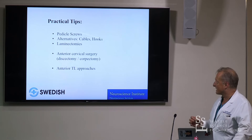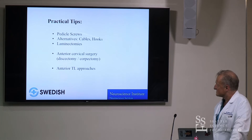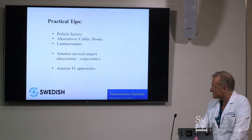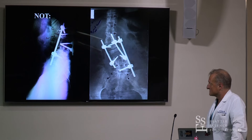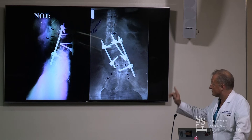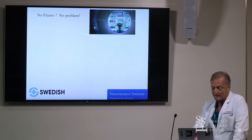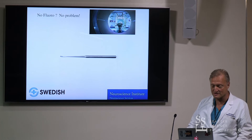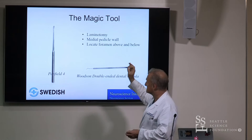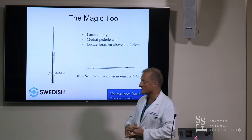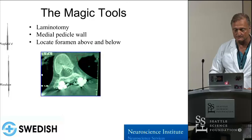Practical tips to close: pedicle screws, alternatives like cables and hooks, and the power of laminectomy. Magic tool number one is a Penfield IV. Magic tool number two is a Woodson dissector. You do small laminotomies or laminectomies, establish the medial pedicle wall, locate the frame above and below, and with these tools advance pedicle screws safely. A laminotomy takes about five to ten minutes but can be faster with experience. You establish the pedicle boundaries — very analogous to distal locking of the Zirkel nail. Use proprioception and 3D vision.